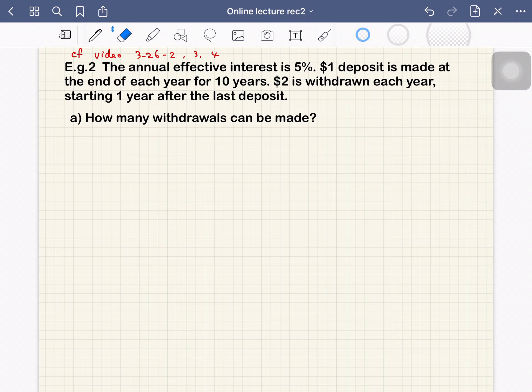Today we want to start with Example 2. The annual effective interest rate is 5%, and $1 deposit is made at the end of each year for 10 years.